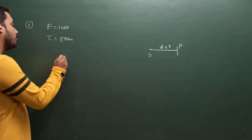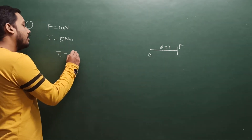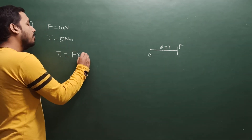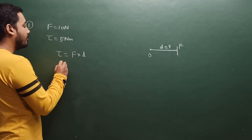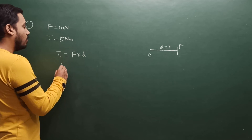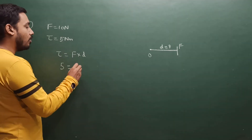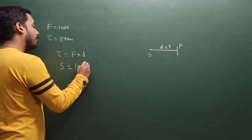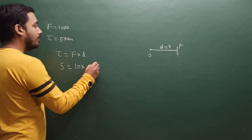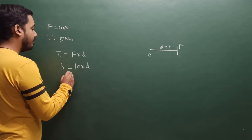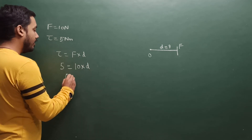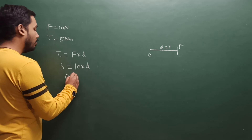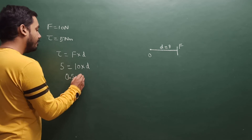Simple formula, it's very easy. Torque is equal to F into D. Torque is 5 — moment of force means torque. I haven't given you in the book, but it's the same. So the answer is 5 by 10, that is 0.5 meter.